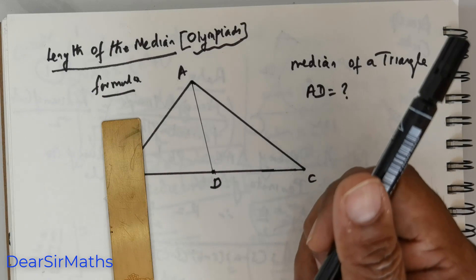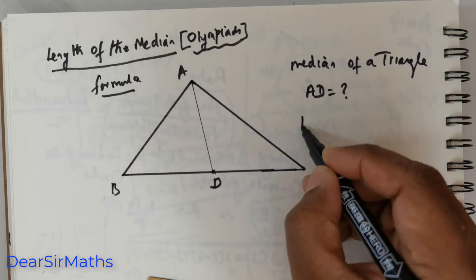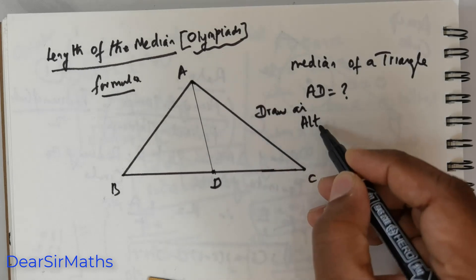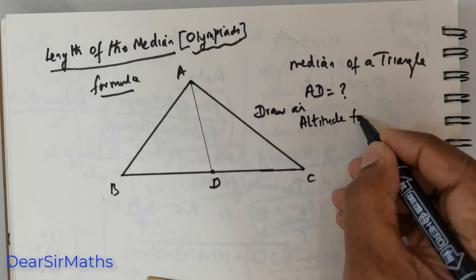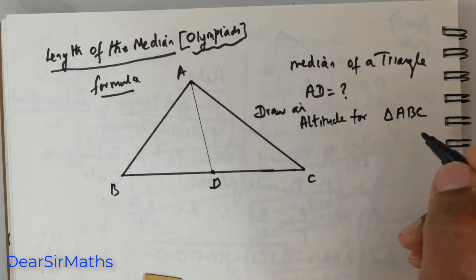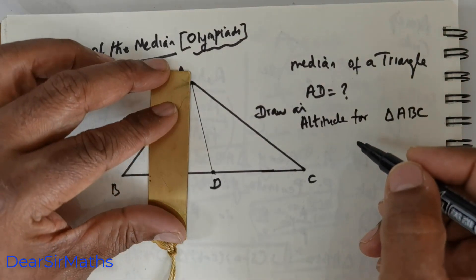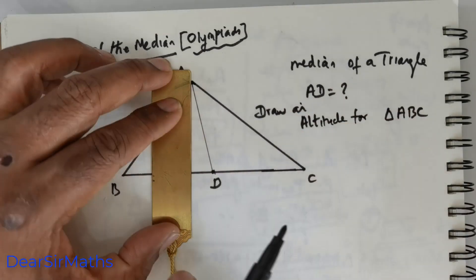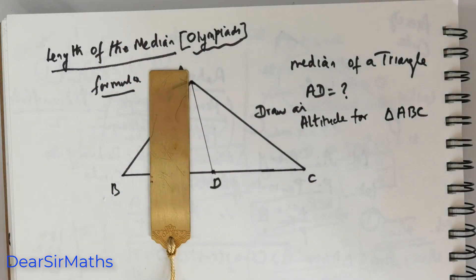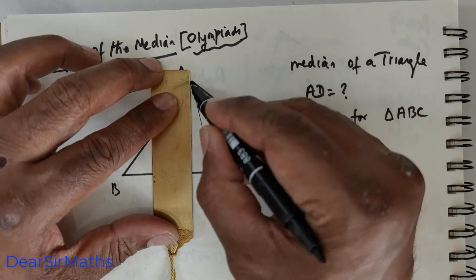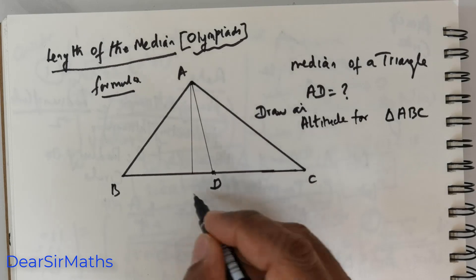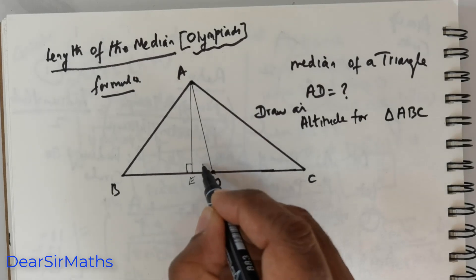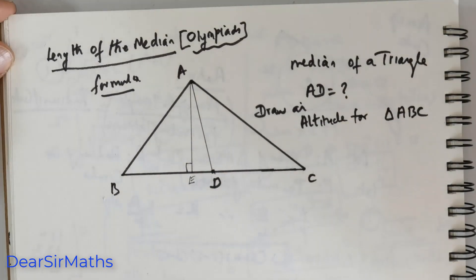Having got that, now let me draw an altitude for this triangle. Draw an altitude for triangle ABC. What is an altitude? Altitude is nothing but a line that is dropped from this vertex perpendicularly to the side BC. So that would mean this would make an angle of 90 degrees. So if I take this as point E, there is a 90 degree here and on the other side. So we clearly see that triangle AED is a right triangle. I will be using Pythagoras.